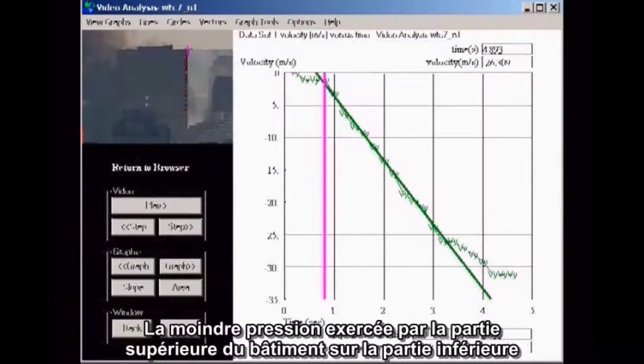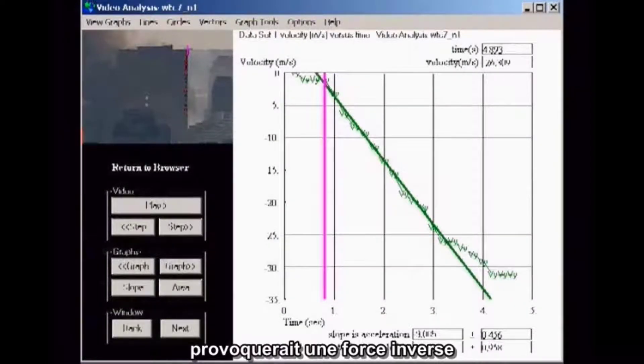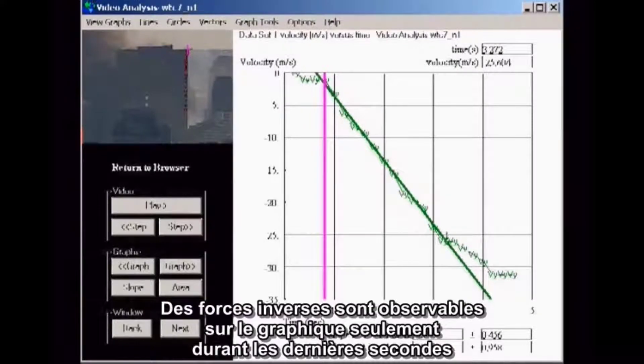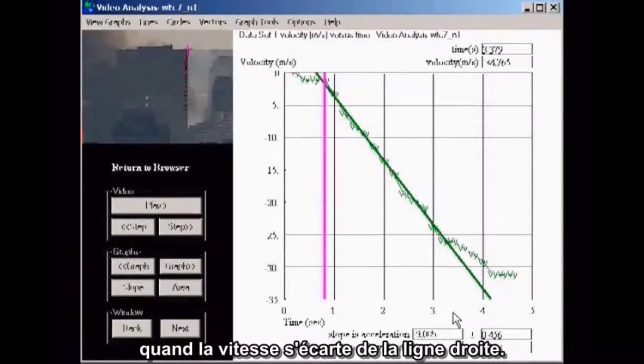Any force the top portion of the building might exert on the lower portion would be reflected in a reaction force that would produce an observable slowing of the rate of fall. A reaction force is observable in this graph only in the last seconds when the velocity strays from the straight line.